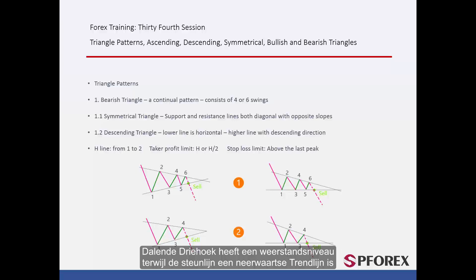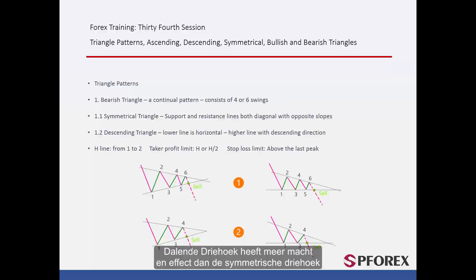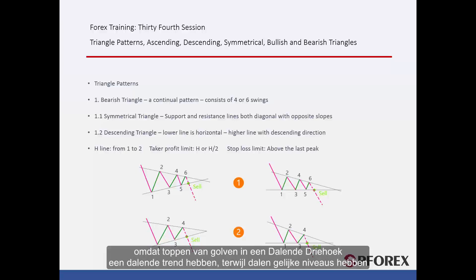A descending triangle has a horizontal resistance level, while the support line is a downward trend line. The descending triangle has more power and effect than the symmetrical triangle, because peaks of waves in a descending triangle have a descending trend, while valleys have equal levels.